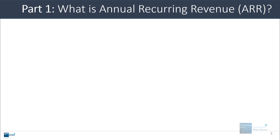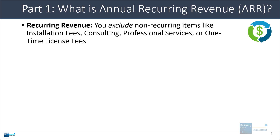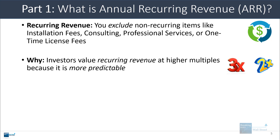So what is annual recurring revenue? The recurring part and the annual part are the two main differences compared to normal revenue. The recurring part means we have to exclude non-recurring revenue sources like installation fees, consulting, professional services, or one-time license fees. Investors tend to value recurring revenue at higher multiples because it is more predictable and gives companies more visibility into how they might perform in the future.